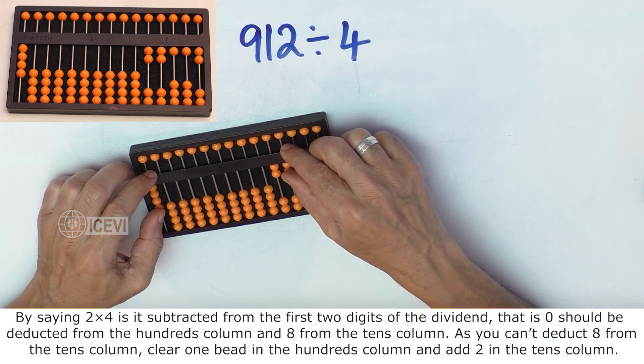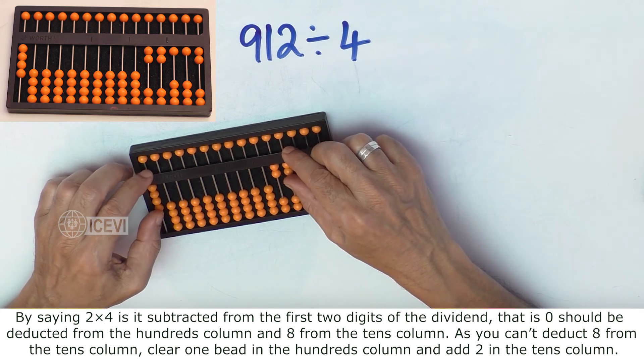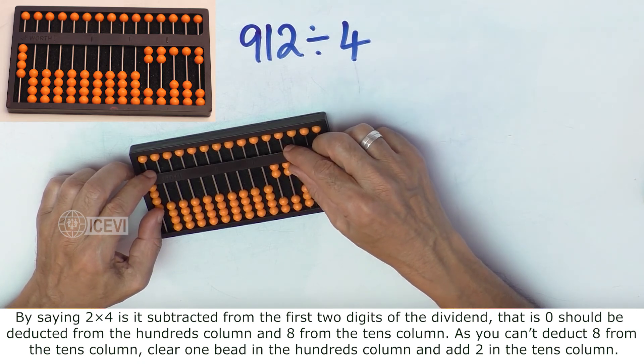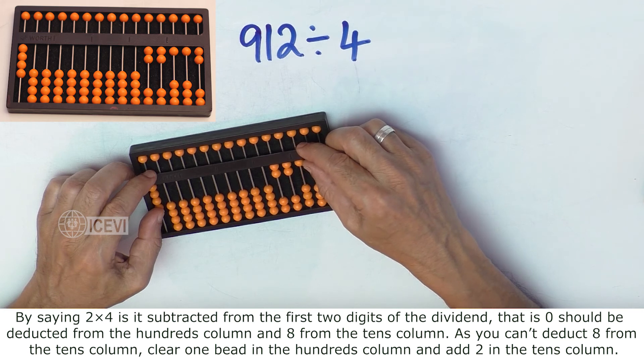By saying 2 multiplied by 4 is 8, it is subtracted from the first 2 digits of the dividend. That is, 0 should be deducted from the hundreds column and 8 from the tens column.